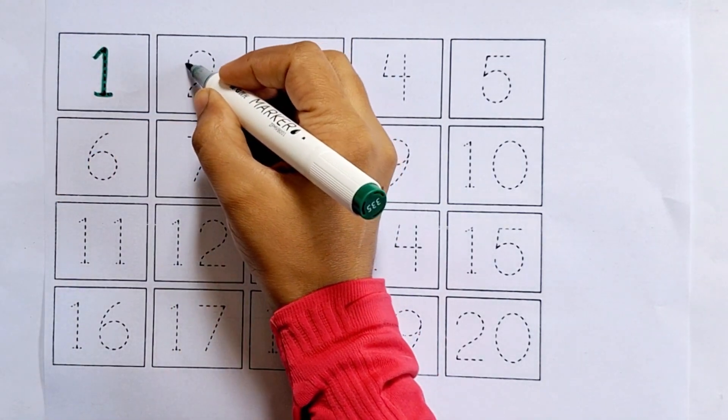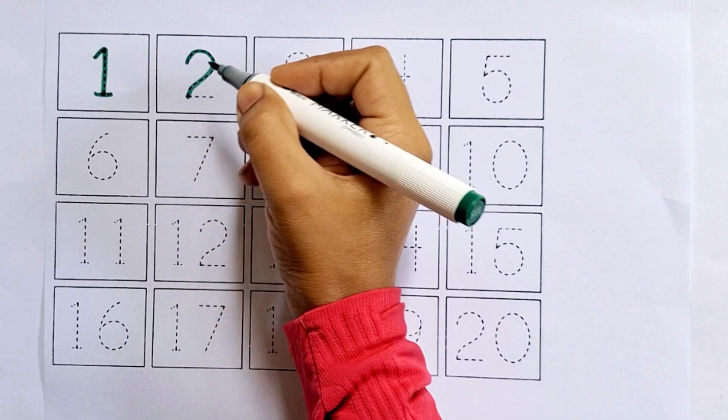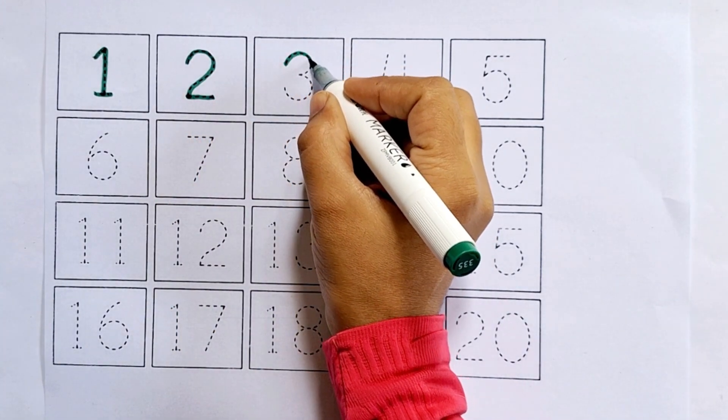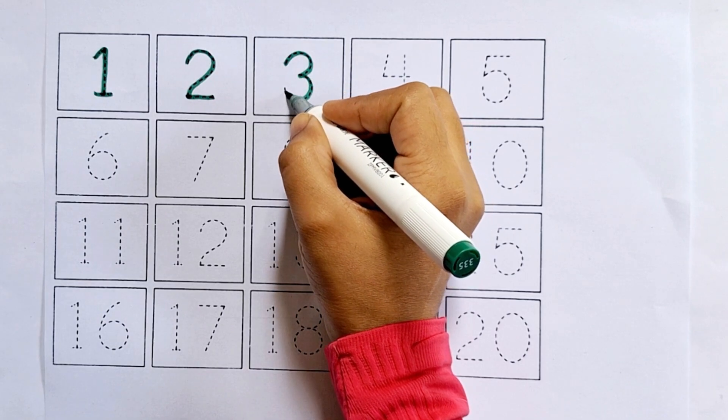Two, this is two. After one comes two. Three, this is three. After two comes three.